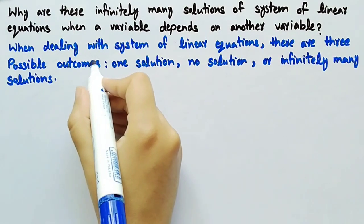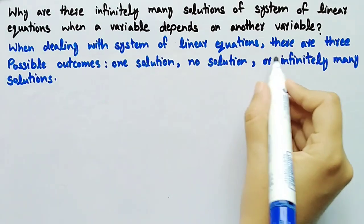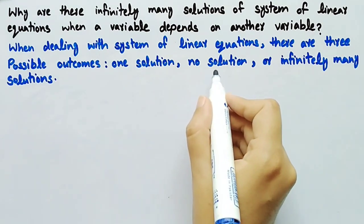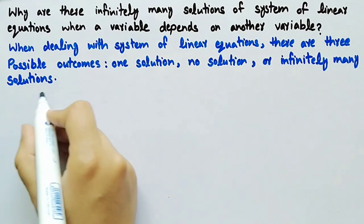When dealing with system of linear equations, there are three possible outcomes: one solution, no solution, or infinitely many solutions.